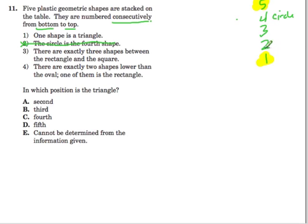So when they say there are exactly three shapes between the rectangle and the square, that means the first and fifth shape have to be the rectangle and square. So now we're getting somewhere. Let's read the last statement. All we know is that there's a rectangle and a square and that these three shapes are between them.